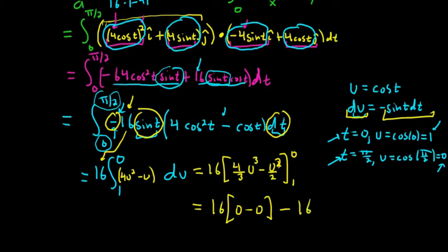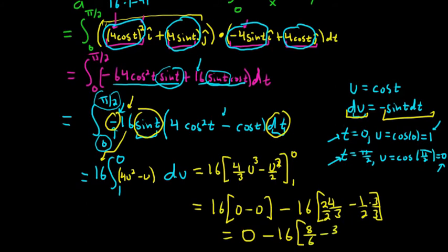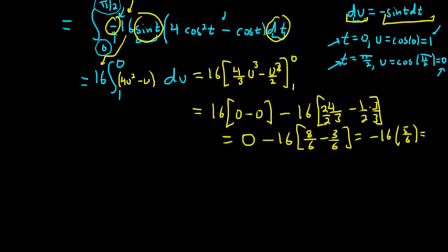So first we plug in 0. So it would be 16 bracket 0 minus 0. It's all 0. Life is good. Minus 16. And now we plug in 1. So it's 4 thirds minus 1 half. So we get minus 16, and we have 4 thirds minus 1 half. You can multiply this by 2 over 2 and multiply this by 3 over 3 to get a common denominator. So it's 8 over 6 minus 3 over 6. This is negative 16. And then 8 minus 3 is 5. So we get 5 over 6.